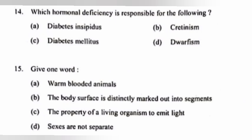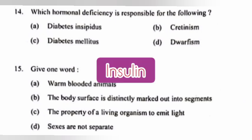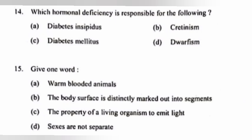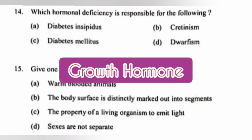C. Diabetes mellitus. Answer: Insulin. D. Dwarfism. Answer: Growth hormone.